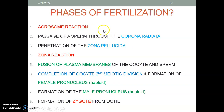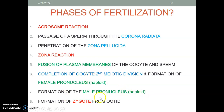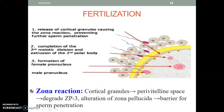To recap: the first step is the acrosomal reaction — enzymes produced help to pass through the corona radiata, then the zona pellucida, then the zona reaction prevents other sperms and allows only one sperm to enter. The plasma membranes of the oocyte and sperm fuse. Then you complete the second meiotic division, form the female pro-nucleus, and the male pro-nucleus also forms. Each of these is haploid, so when they join, you get your diploid restoration, and then you form the zygote.